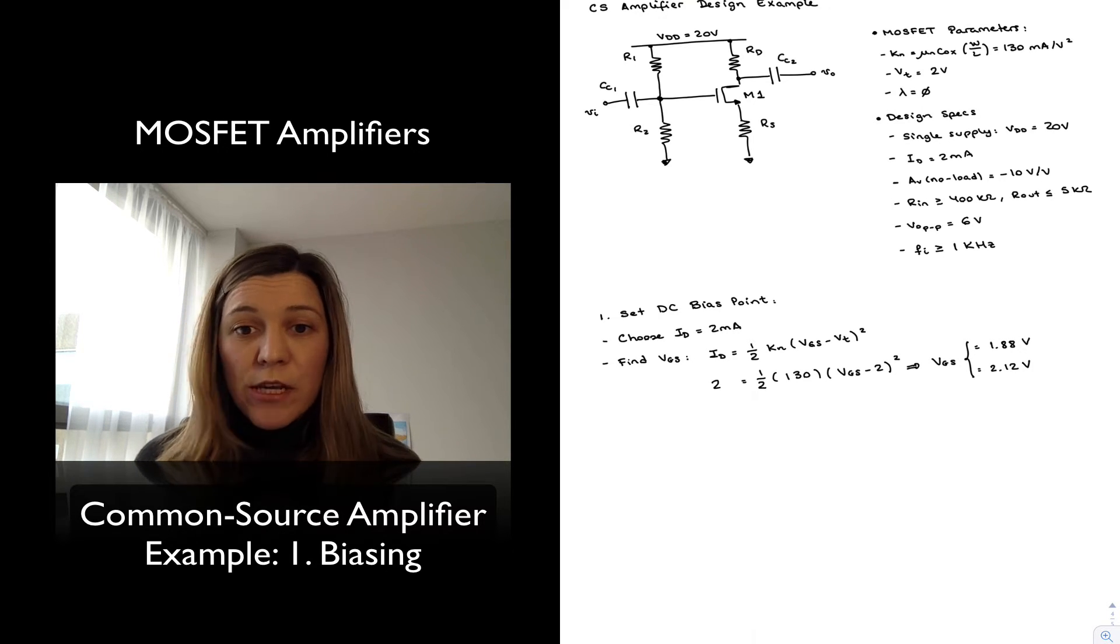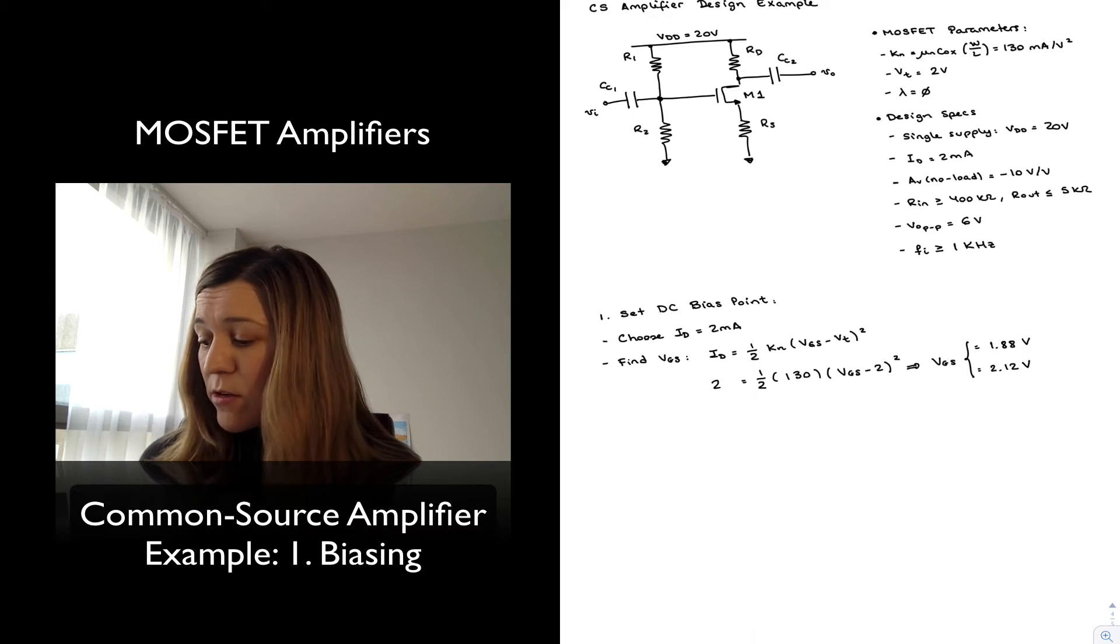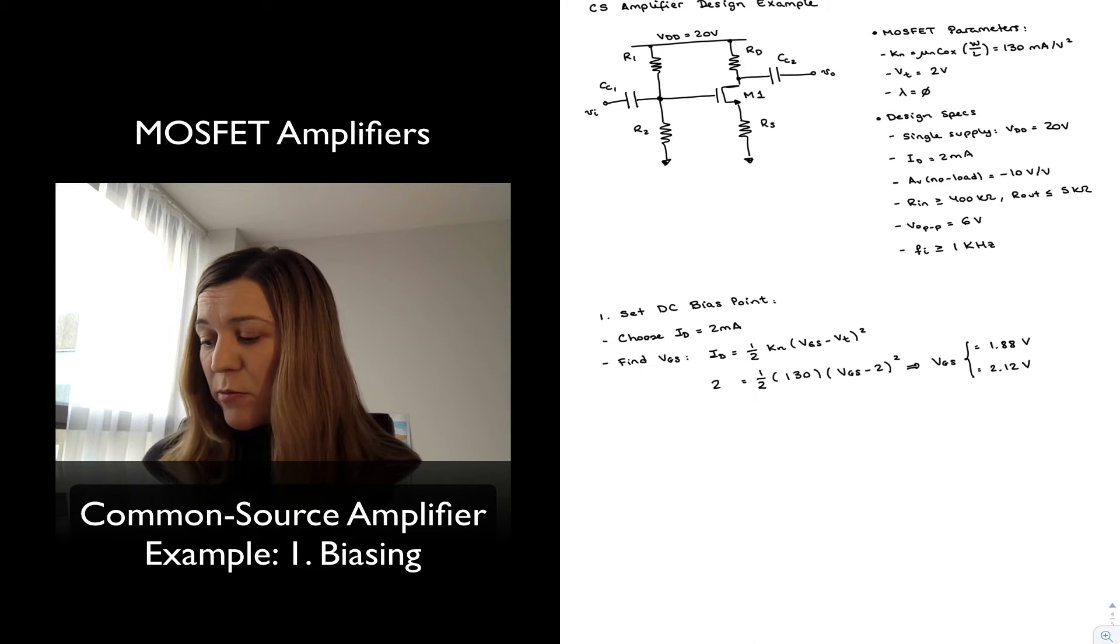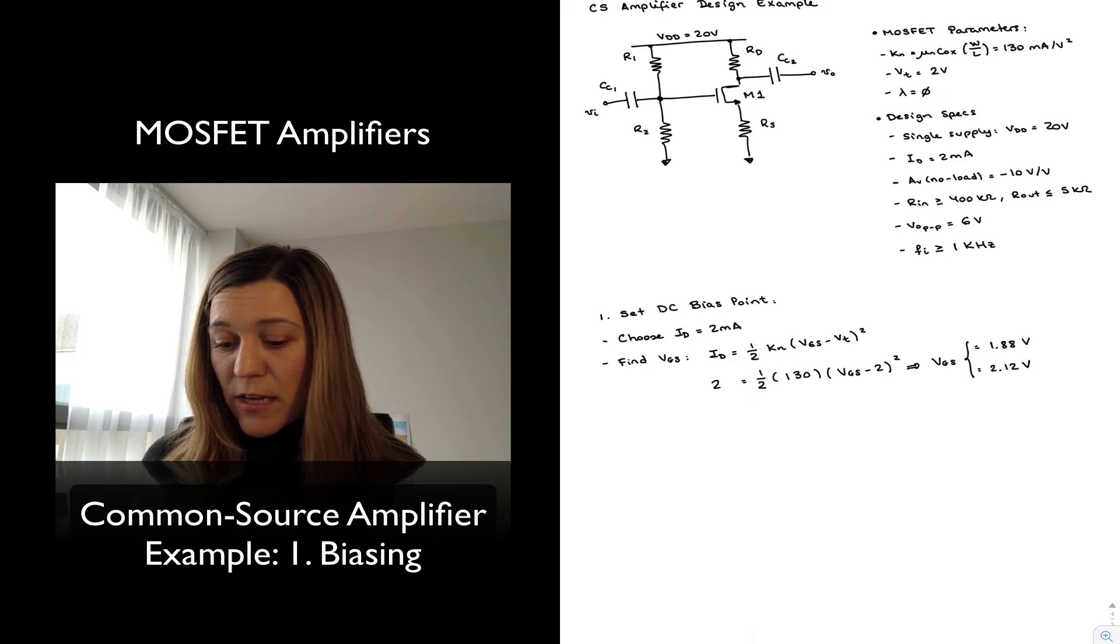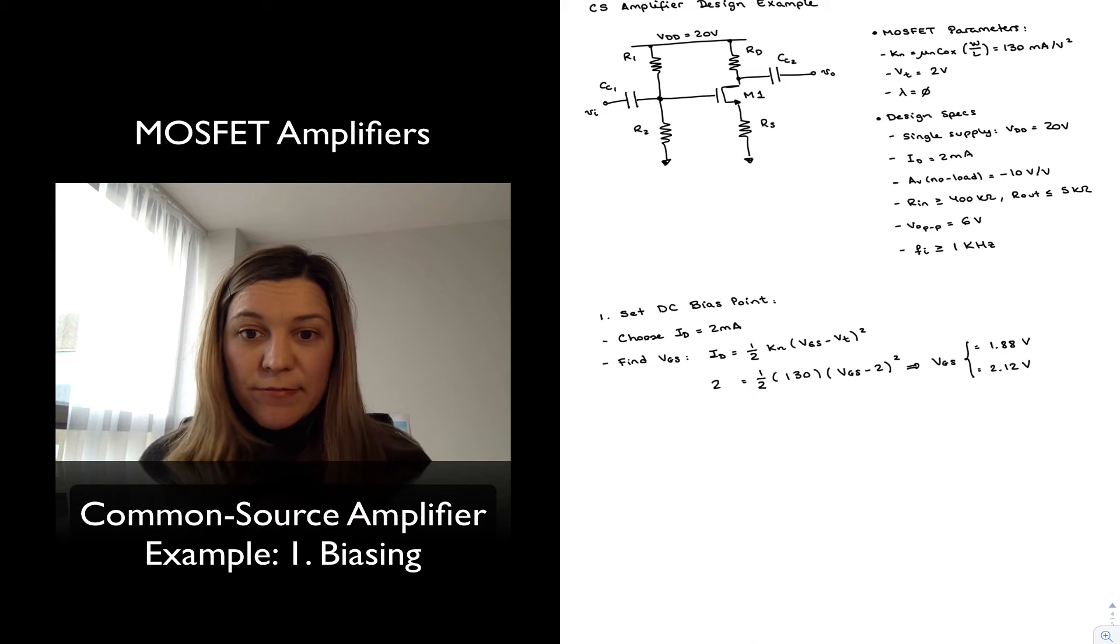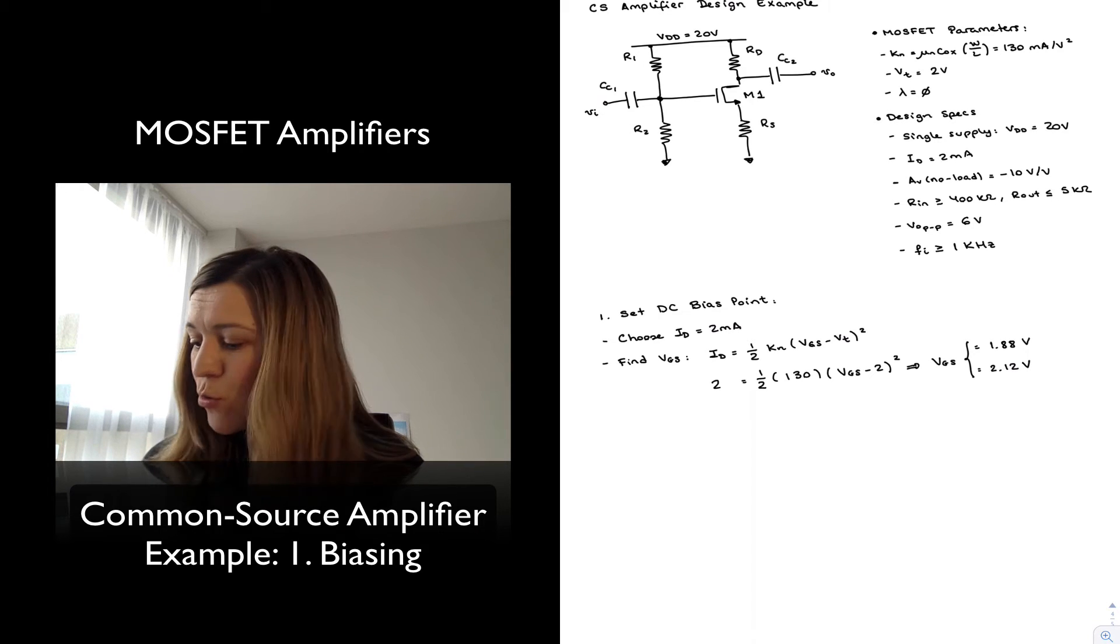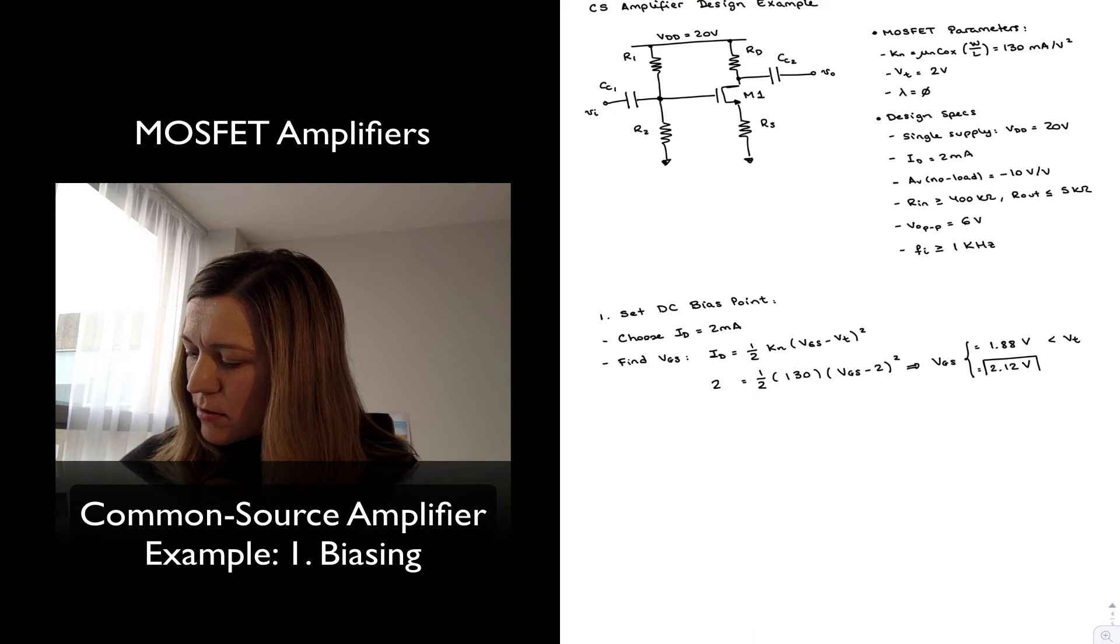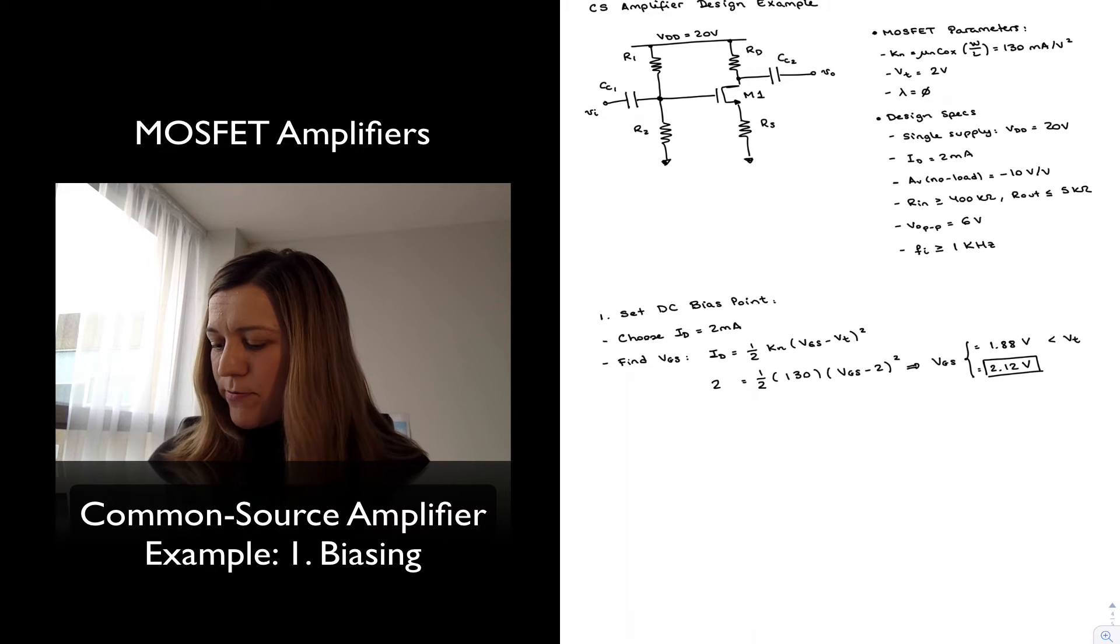Now I know that the first case is not going to be the right answer because it is lower than my threshold voltage. If I apply that VGS, I can't have a VGS that is lower than my Vt, otherwise my transistor will be in cutoff, so this is less than Vt. This is the right solution in this particular case.